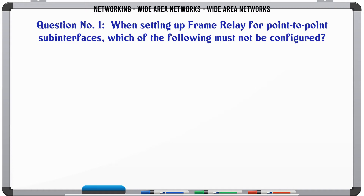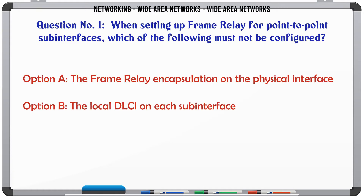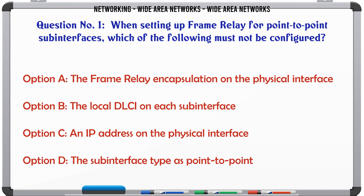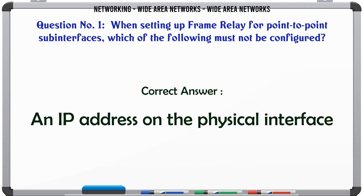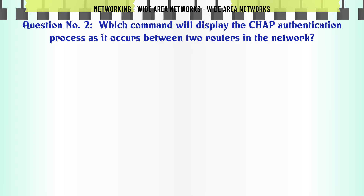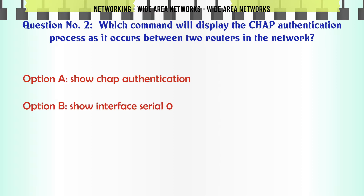When setting up frame relay for point-to-point sub-interfaces, which of the following must not be configured? A. Frame relay encapsulation on the physical interface. B. The local DLCI on each sub-interface. C. An IP address on the physical interface. D. The sub-interface type as point-to-point. The correct answer is C: An IP address on the physical interface.